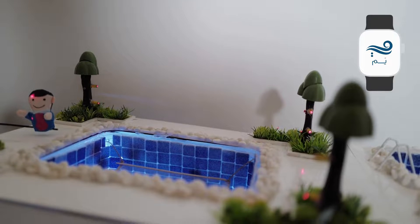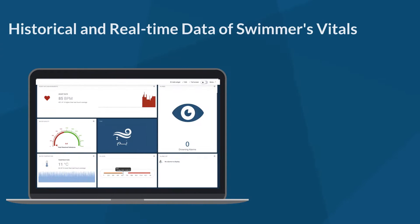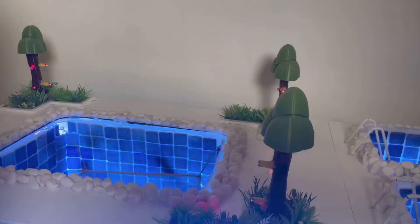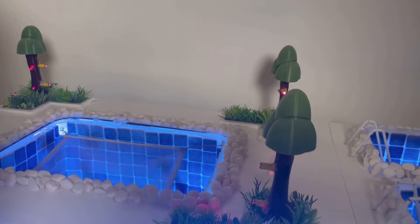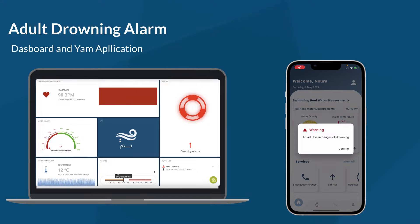Swimmers must wear the wristband while swimming in order to monitor the swimmer's vitals. Thereby, supervisors and admins can view the swimmer's data using the YAM application and dashboard. If something were to go wrong while they were in the pool, YAM will lift the net up and protect the swimmer, thereby notifying the admin and supervisor about such incident.